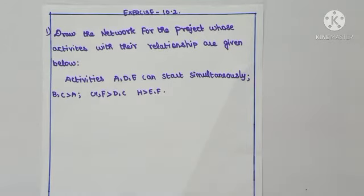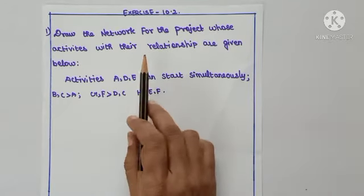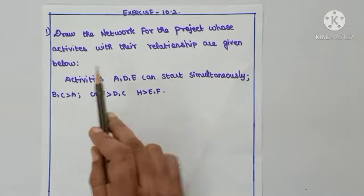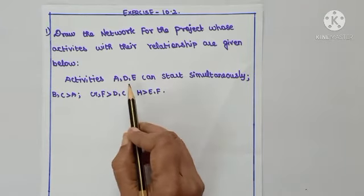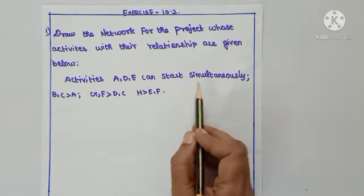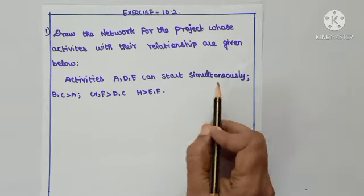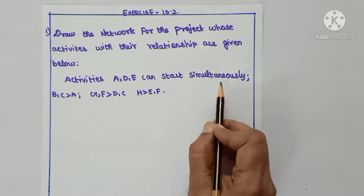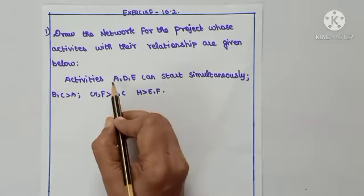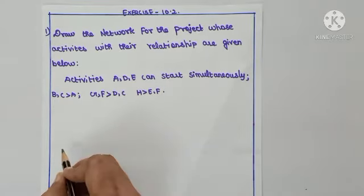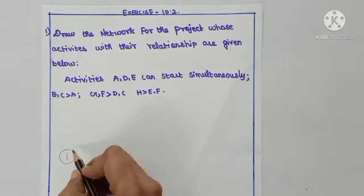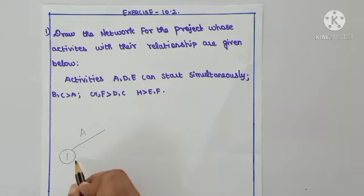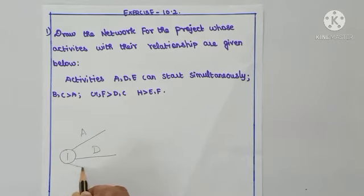Exercise 10.2, Question number 1: Draw the network for the project. Activities A, D, E can start simultaneously. The word simultaneously means together, at the same time. So A, D, E are the starting activities. We mark event 1 and then draw A, D, and E from it.